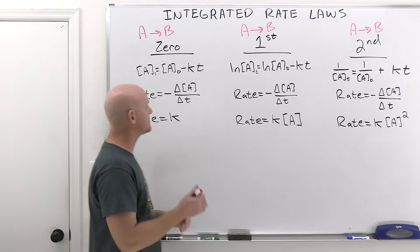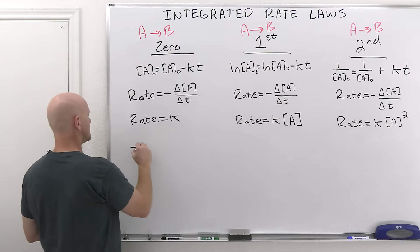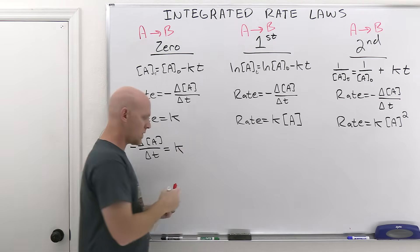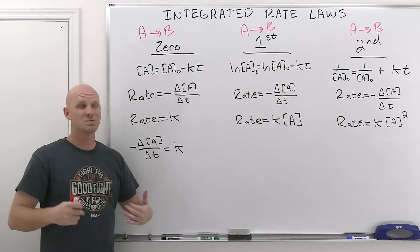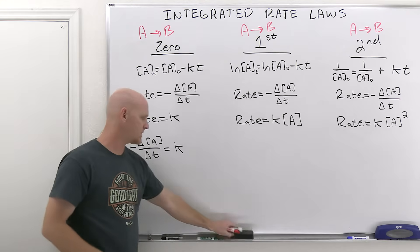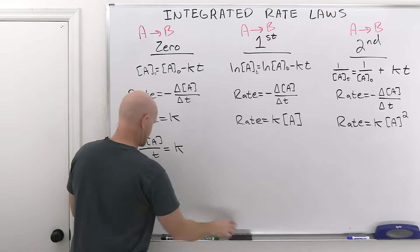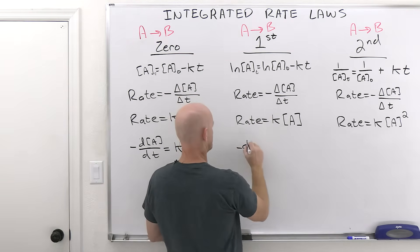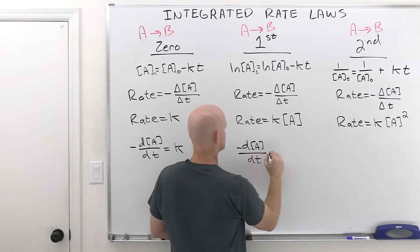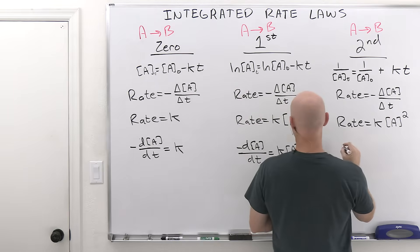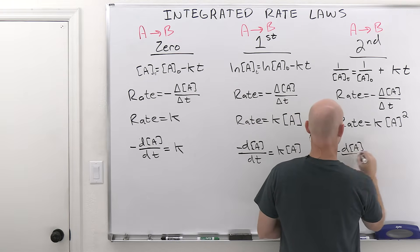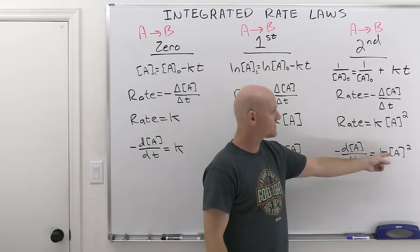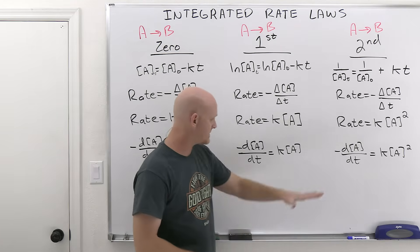The rate expression and the rate law are both equal to the rate, which means they're equal to each other — that's the key here. So we're going to set negative d[A]/dt equal to K for zero order, negative d[A]/dt equal to K times A for first order, and negative d[A]/dt equal to K times A squared for second order. Each of these is a differential equation, because we have two different variables changing at the same time.